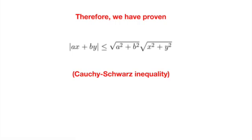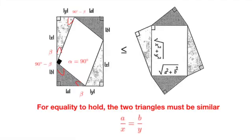For equality to hold, alpha needs to be 90 degrees, and by angle chasing, this happens when the two triangles are similar, which is when a divided by x equals b divided by y.